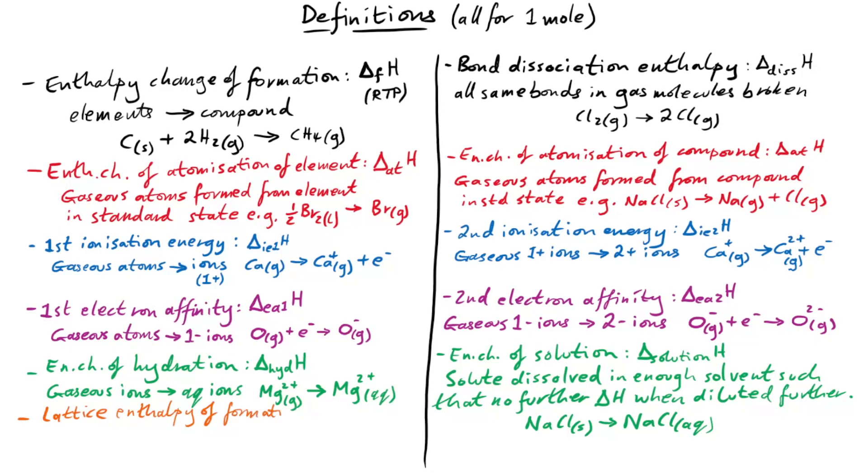We have lattice enthalpy of formation. When we have one mole of a solid ionic compound formed from its gaseous ions at RTP. Then we have the opposite of that. Lattice enthalpy of dissociation. When one mole of a solid ionic compound is formed into its gaseous ions.